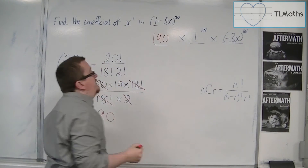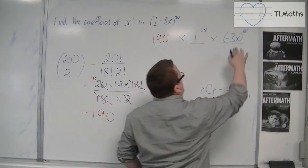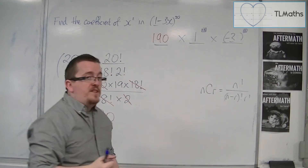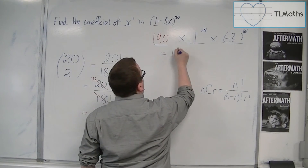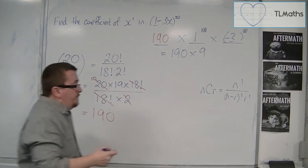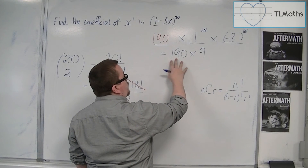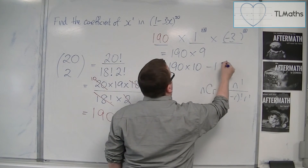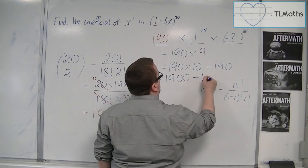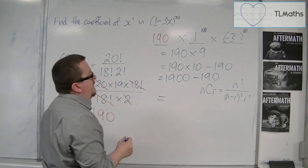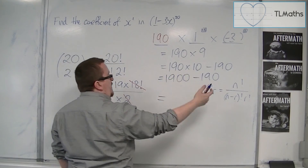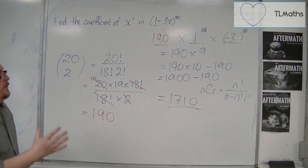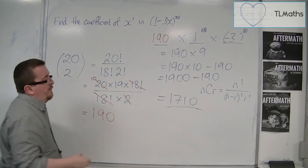So the number we needed was 190. The coefficient — removing the x — is 190 times (minus 3) squared, so 190 times 9. Now, 190 times 9 is the same as 190 times 10 take away 190, which is 1900 take away 190. That's the same as 1900 take away 200 plus 10, giving us 1710. And that is the coefficient we want.